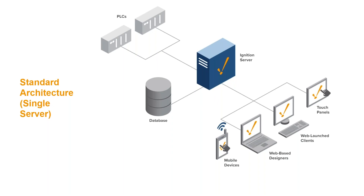Basically, if you have reliable connections and you don't need to worry about data loss if the connection goes down — if you're not worried about someone taking a forklift through a network cable, or if that happens it's not going to be a big deal — then having a single server makes sense. Smaller systems can still be fairly large, with tens or hundreds of thousands of tags and up to potentially 100 or 200 clients at the same time.